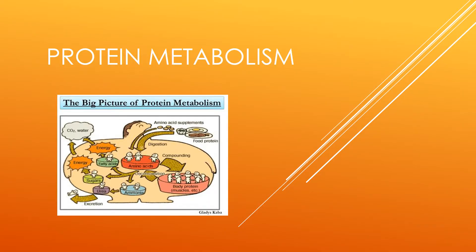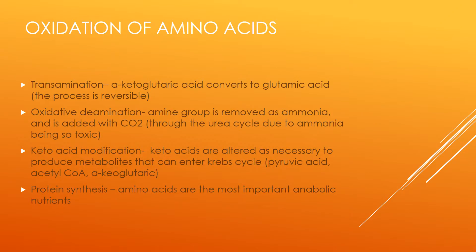Next is protein metabolism. Oxidation of amino acids: transamination — alpha-ketoglutaric acid converts to glutamic acid, which is also reversible. Oxidative deamination — the amino group is removed as ammonia and is added with CO2 through the urea cycle due to ammonia being so toxic. Keto acid modification: keto acids are altered as necessary to produce metabolites that can enter the Krebs cycle for protein synthesis.